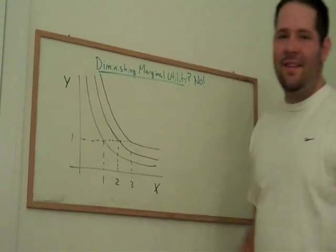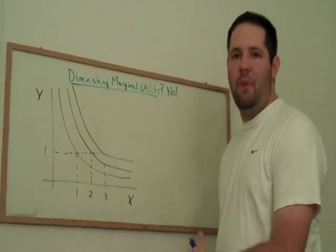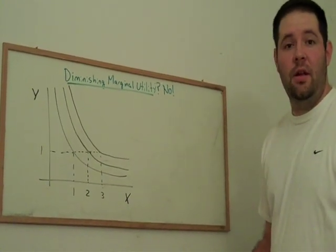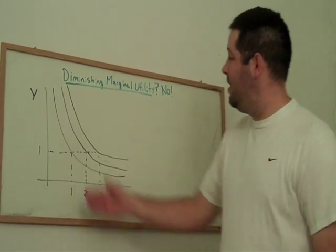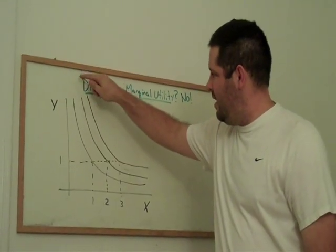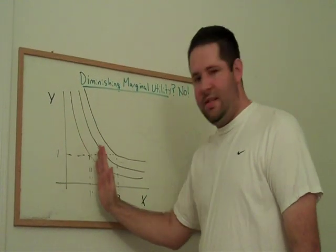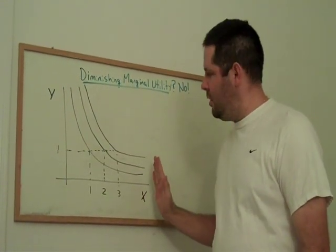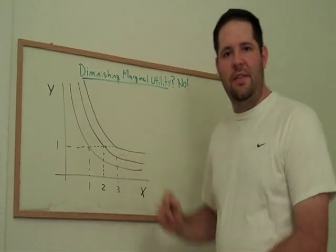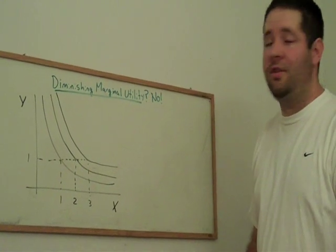Here we have three indifference curves on a preference map of bundles of x and y for a consumer. These are indifference curves of the usual shape — they're convex to the origin, they're downward sloping, and they have the property that as we increase the amount of x in the bundle, the slope gets flatter. That is the concept of diminishing marginal rate of substitution.